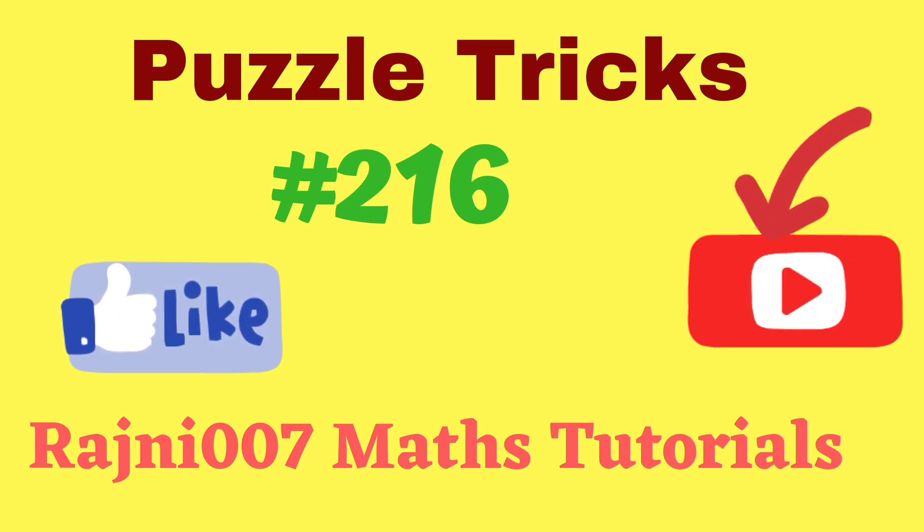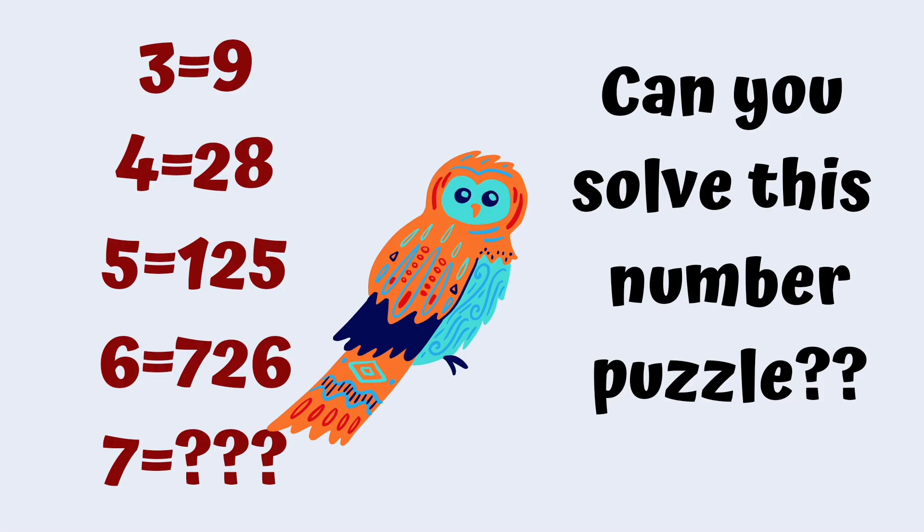If 3 is equal to 9, 4 is equal to 28, 5 is equal to 125, 6 is equal to 726, then what will be the value of number 7? Can you solve this number puzzle?